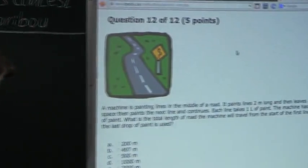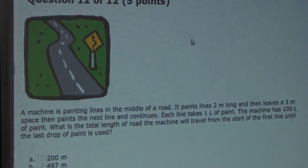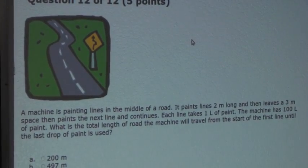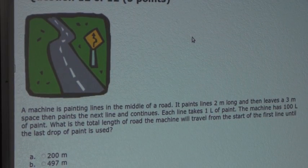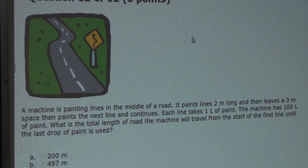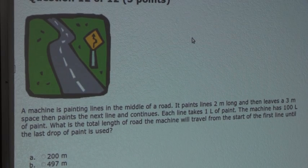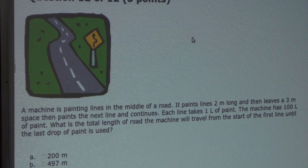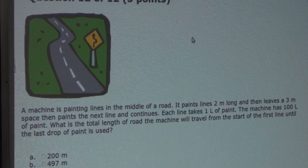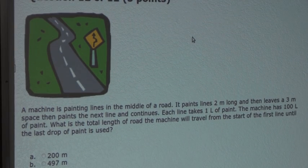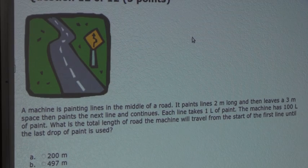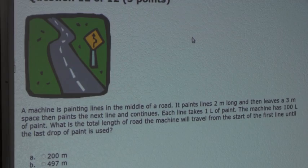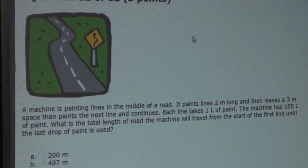So, the question is: a machine is painting lines in the middle of a road. It paints lines 2 meters long and then leaves a 3 meter space, then paints the next line and continues. Each line takes 1 liter of paint. The machine has 100 liters of paint. What is the total length of road the machine will travel from the start of the first line until the last drop of paint is used?